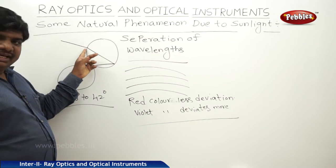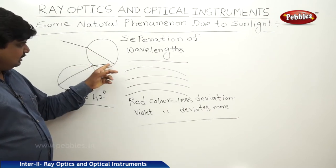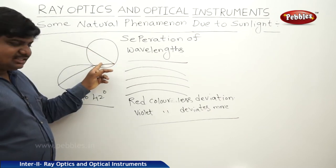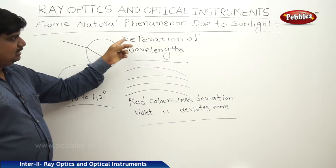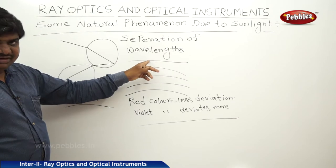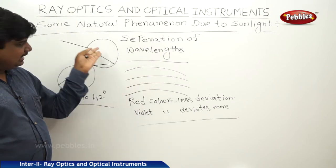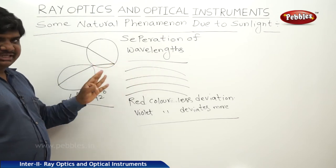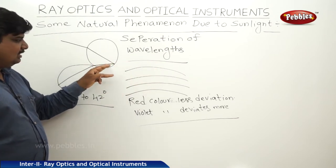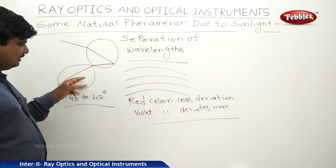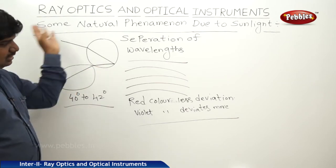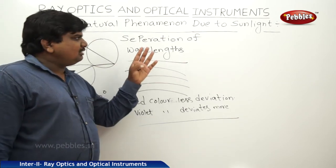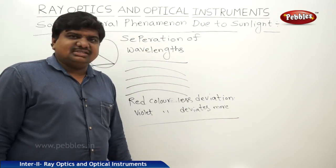So the summary of rainbow formation: incident light undergoes refraction, through which the separation of wavelengths takes place. That is why internal dispersion also takes place and that dispersed light comes out. This is the combined effect we can observe in sunlight.